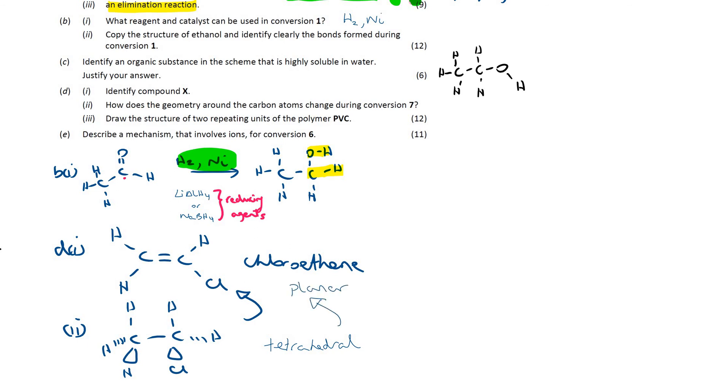We can just write planar for that. But, essentially there, you've got everything is in the one plane for the alkene. So, in two dimensions. Whereas, when you have a tetrahedral arrangement, it's in three dimensions. That chlorine atom is actually coming out towards you. It's going away from you.